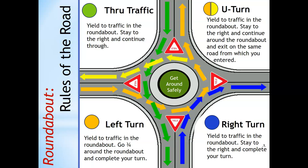Let's first look at the green arrows. This driver wants to go straight through the roundabout. First, the driver should yield to oncoming traffic and stay to the right and continue through. Now, let's look at the blue arrows. This driver wants to make a right-hand turn. Once again, they must yield to oncoming traffic, stay to the right, and complete the turn.